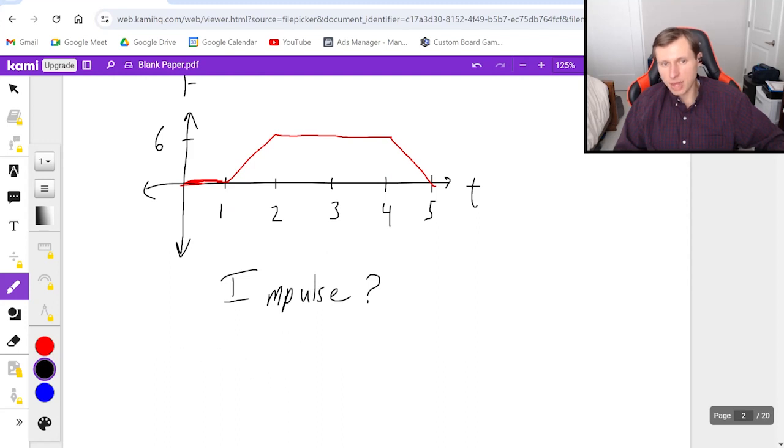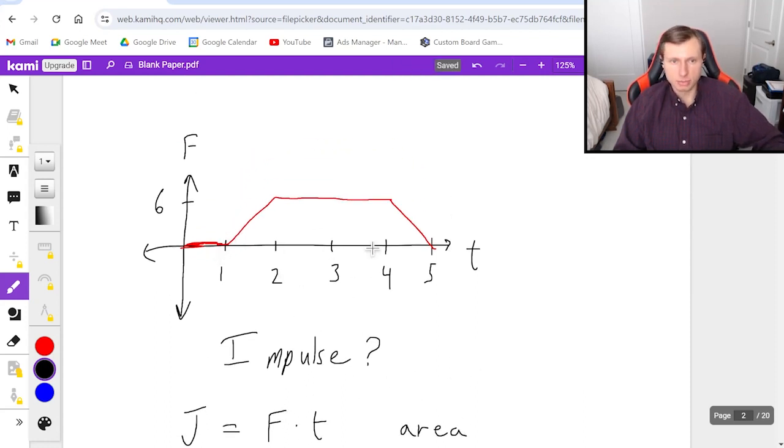First, we remember that impulse J is equal to force times time. Again, this means I'm going to be finding the area for the first five seconds here. So this is a trapezoid shape here. Maybe you don't know the equation of a trapezoid. That's fine. What I would tell you to do in that case is break it up into three shapes.